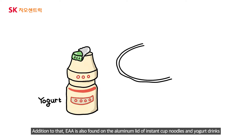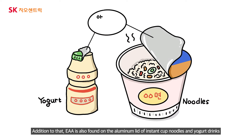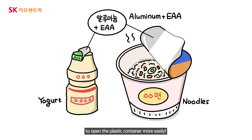In addition to that, EAA is also found on the aluminum lid of instant cup noodles and yogurt drinks, making it easier to open the plastic container.